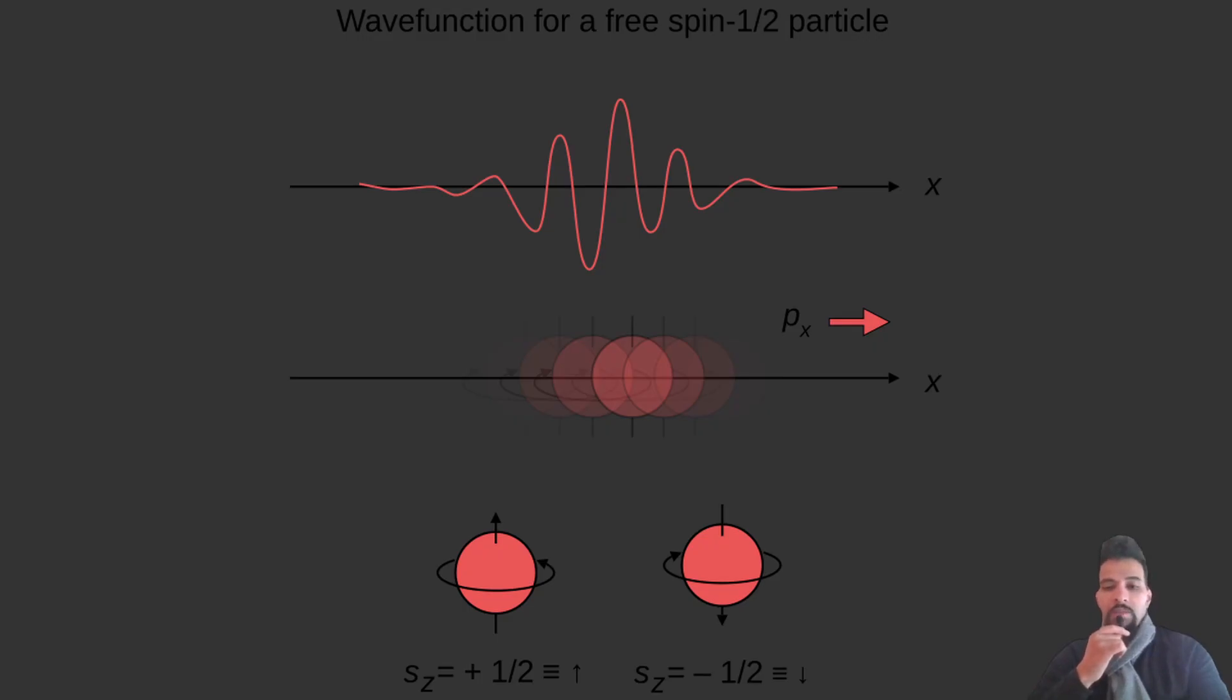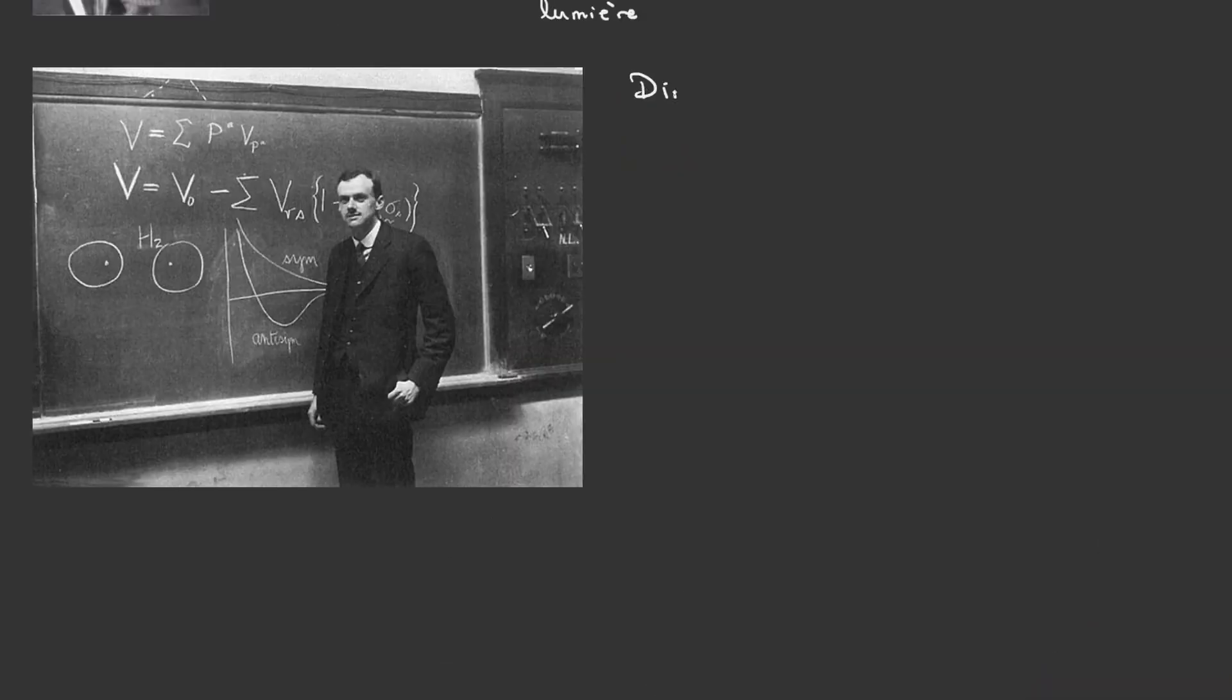Relativistic effects and spin are described by another equation more general and more complicated than the Schrödinger equation, which is the Dirac equation, formulated by the English physicist Paul Dirac in 1928.